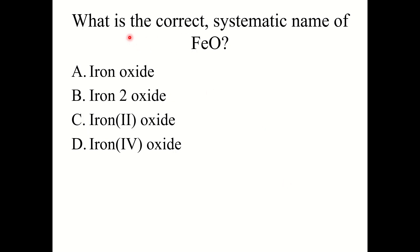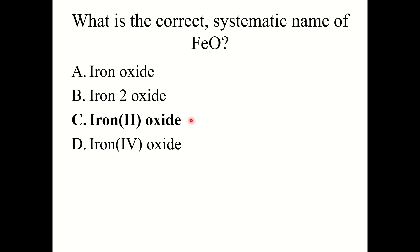Knowledge check: What is the correct systematic name of FeO? The correct answer is iron(II) oxide. Oxygen is −2 and there is only one oxygen anion, so the iron atom must have a charge of +2, making the name iron(II) oxide.